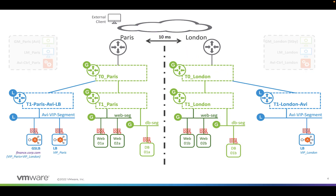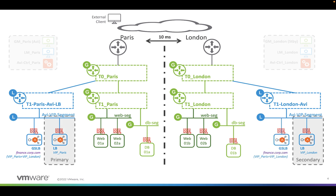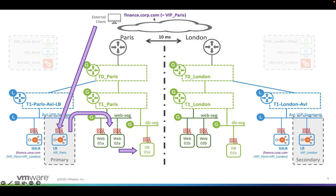For the GSLB part, I configure GSLB in Paris and London for the specific name finance.corp.com. The definition of this DNS name is: VIP Paris first, but if VIP Paris doesn't work, then use VIP London. This is configured centrally in my GSLB in Paris and London. AVI Networks allows synchronization between the two GSLB locations, so there's no need to replicate the configuration manually. When everything works fine, the client goes to finance.corp.com, which resolves to VIP Paris.